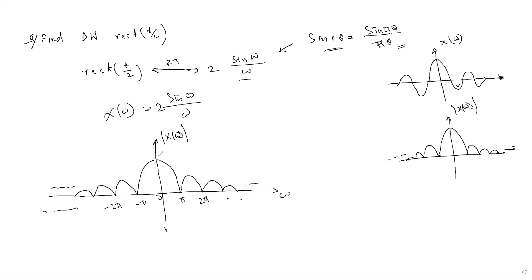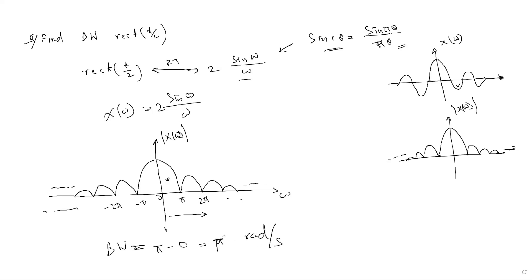I have discussed two types of signals for bandwidth calculation: one is Gaussian-type where we use 3dB bandwidth or half-power bandwidth. If the signal shape is like a sinc, we take the main lobe only. We consider only positive frequencies, so bandwidth is π minus 0, which equals π radians per second.